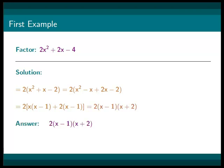And we are left with 2 times x minus 1 times x plus 2. In conclusion, our answer will be 2 times x minus 1 times x plus 2.